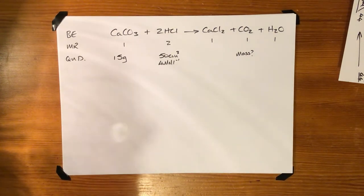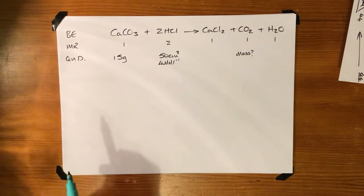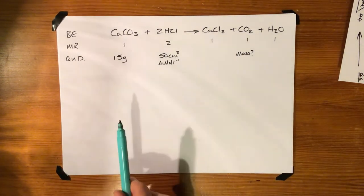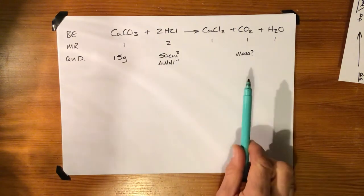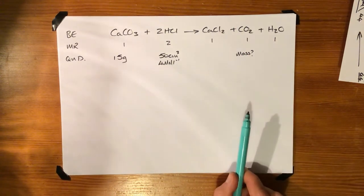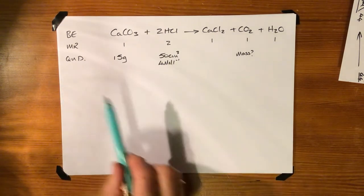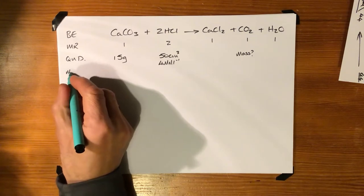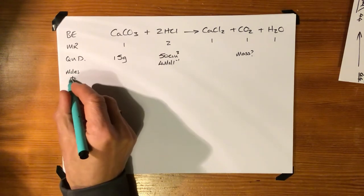Right, and so the first thing you have to work out is which one of these bad boys is in excess. Which is in excess? Because the one that's not in excess is going to determine how much of your carbon dioxide you've produced. So you work out which is in excess and you can then ignore it.